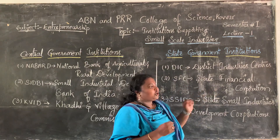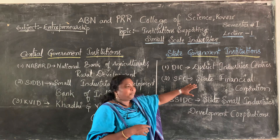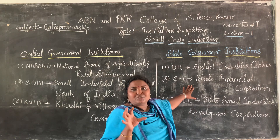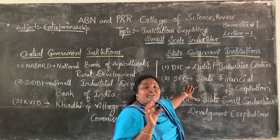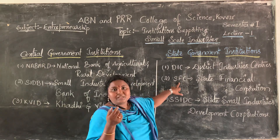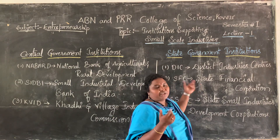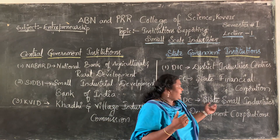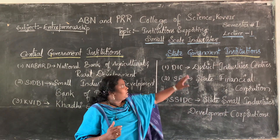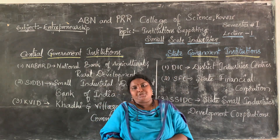Next, state financial corporations. The state financial corporation will encourage the institutes of that particular state with the help of financial aid. Finance means money — loans etc. can be given from this. And SSIDC, State Small Industry Development Corporation. These three institutions come under state government institutions.